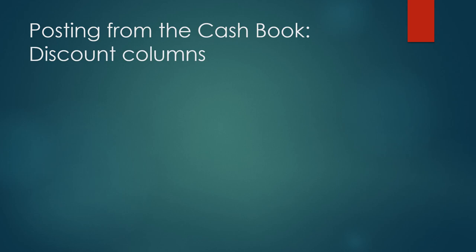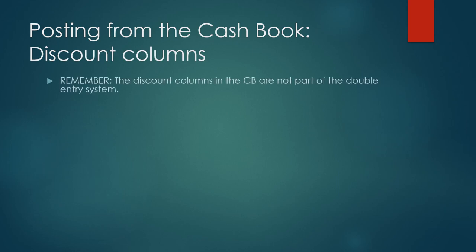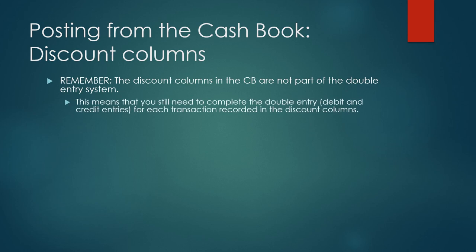Posting from the cash book — looking at the discount columns. Remember, the discount columns in the cash book are not part of the double entry system. This means that you still need to complete the double entry — debit and credit entries — for each transaction recorded in the discount columns.